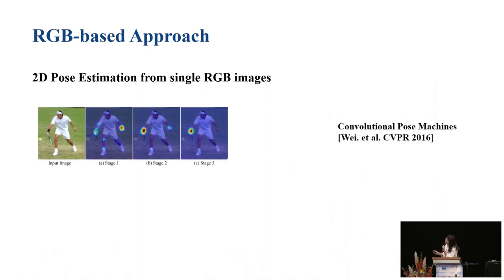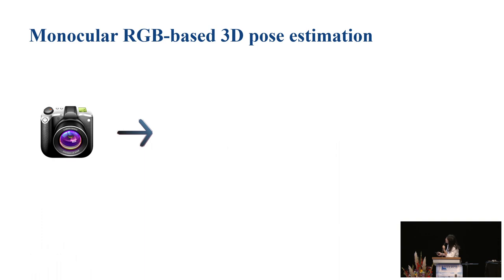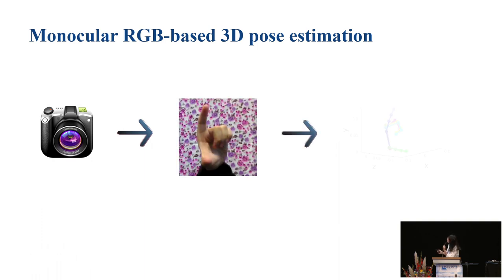For 2D pose estimation from single RGB images, there are many works. Classical ones such as convolutional pose machine and stacked hourglass networks have done a very good job, even in spaces with occlusions. Since there are many works for 2D pose estimation, can we predict the 3D hand pose from monocular RGB images? There are many color images in our daily life which are commonly used.